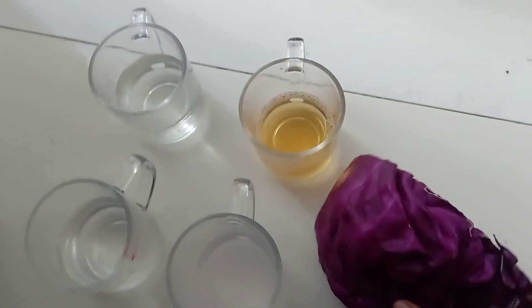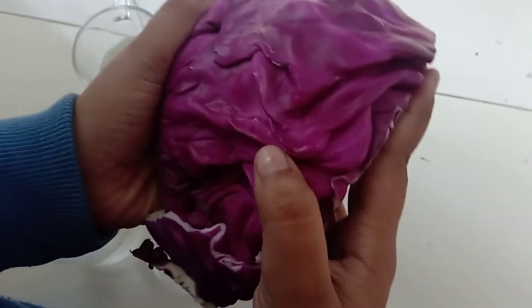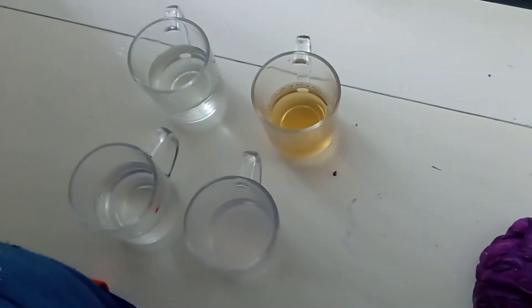Hello guys, welcome back to my channel. Today we are making a new magic trick called making colors from one color. So we have taken a local red cabbage. This is not a purple cabbage, but it is called red cabbage.